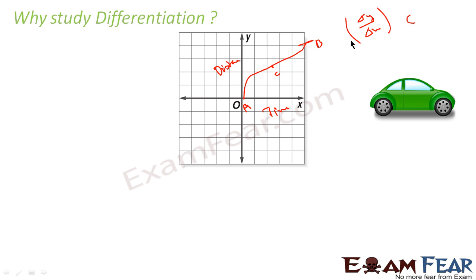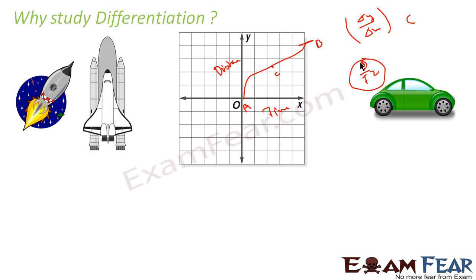Also, if you want to find acceleration, you double-differentiate the distance — you will get acceleration, because acceleration is nothing but distance divided by time squared. So if you are a science student, you know that. If not, just understand that if you have a distance graph and want to find velocity or speed, you can find it using differentiation.